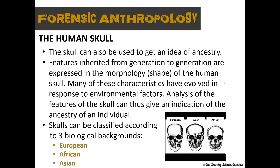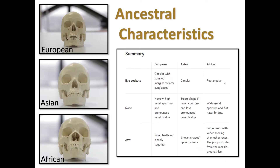The skull can also be used to get an idea of ancestry. Features inherited from generation to generation are expressed in the morphology, or shape, of the human skull, and many of these characteristics evolved in response to environmental factors. Analysis of skull features can give an indication of the ancestry of an individual. By ancestry, we mean a person's biological background — specifically skulls can be classified according to three biological backgrounds: European, African, and Asian, referring to the area where a person's evolutionary background is from. You can see in the image the differences in features for each ancestry, along with some written characteristics. Pause the video to write this down if needed.